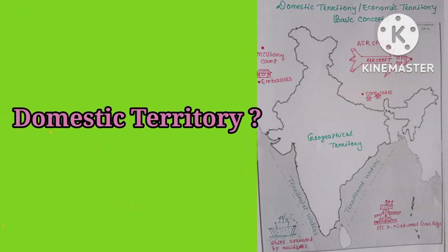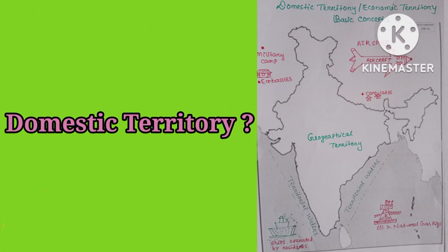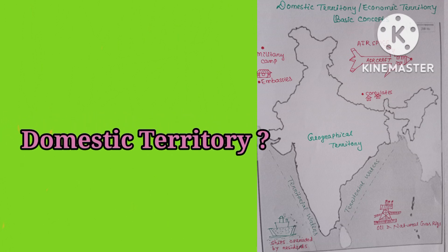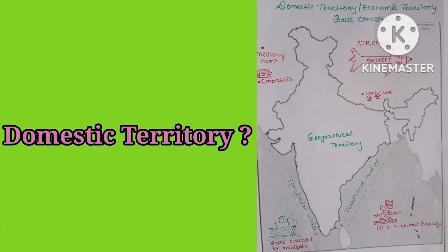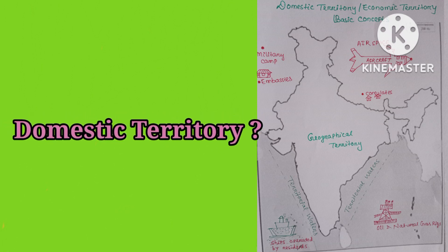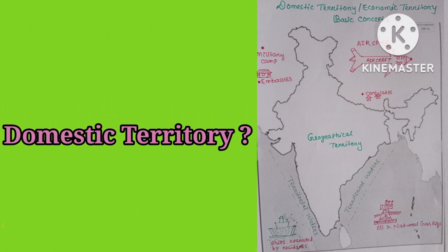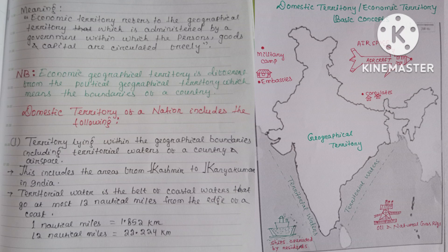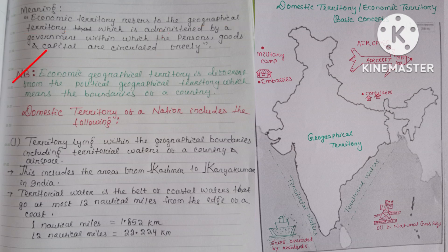Before discussing the concepts of GDP and GNP, let's first understand what is domestic territory. For a non-economics student, domestic territory of a nation is understood to be the territory lying within the political frontiers of a country — that is, India's map. But this definition is incomplete, because in national income accounting it is used in a wider sense. In economics, domestic territory or economic territory refers to the geographical territory administered by a government within which persons, goods, and capital circulate freely. Economic geographical territory is different from political geographical territory.